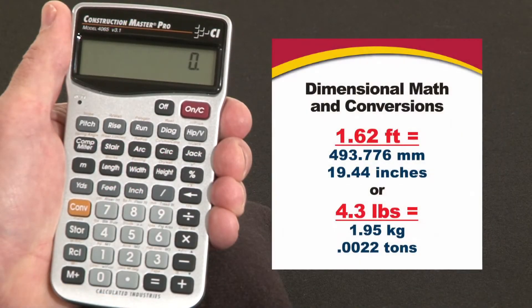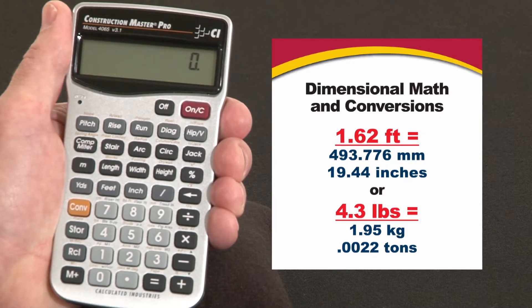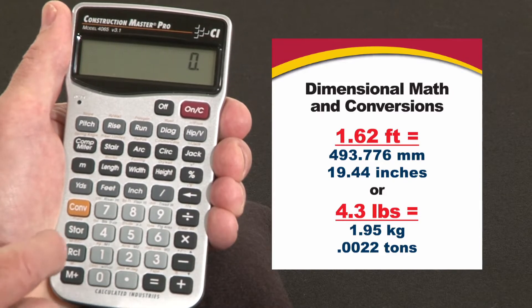Now let me show you how to do dimensional math and conversions on your Construction Master Pro. And keep in mind, the keystrokes are exactly the same if you're using our Trig model or our desktop models. Both give you fast, accurate solutions for all your dimensional math and conversion needs.